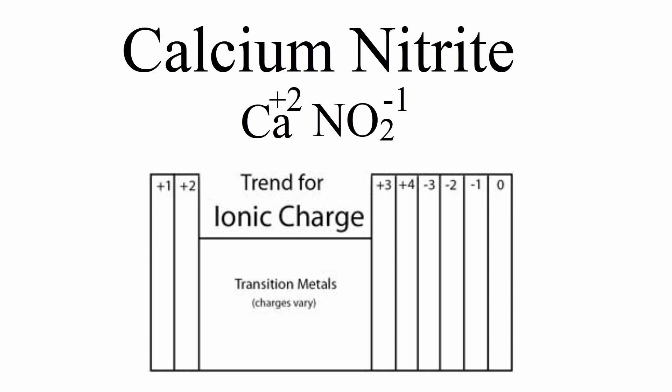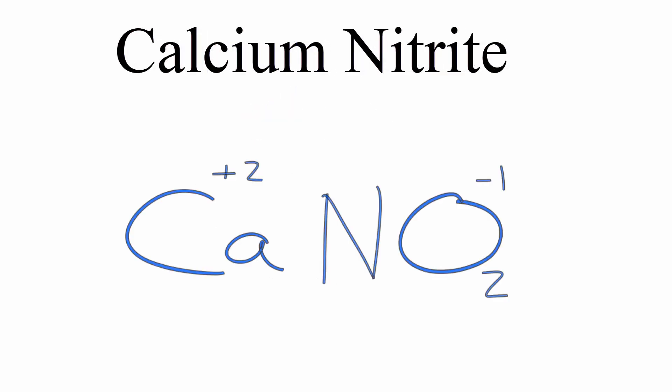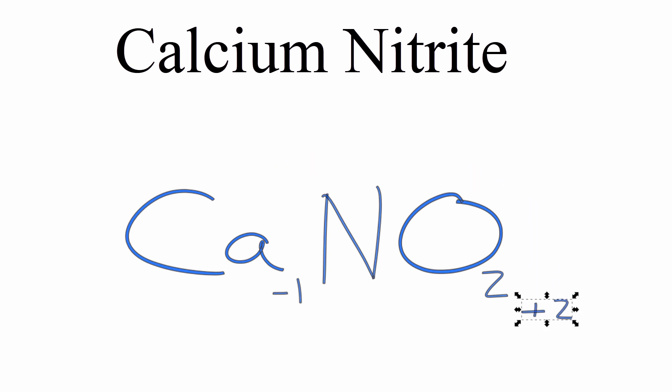So we have the charges, and now we can balance these charges out to get the correct formula for the compound calcium nitrite. We have calcium with a plus 2 and the nitrite ion with a minus 1. To balance the charges out, I'll use the crisscross method and then check my work. I take the negative 1 and move it down to the calcium, and the positive 2 I'll move it outside the nitrite ion.